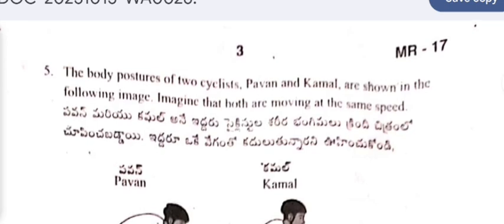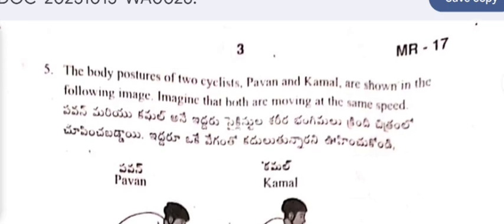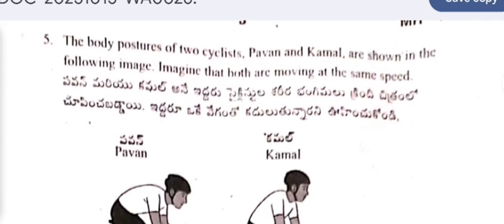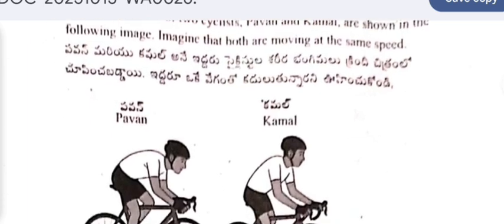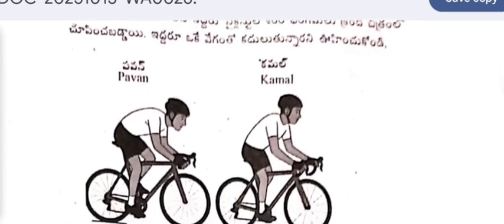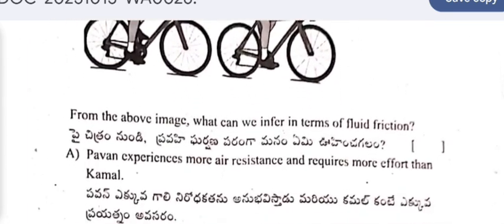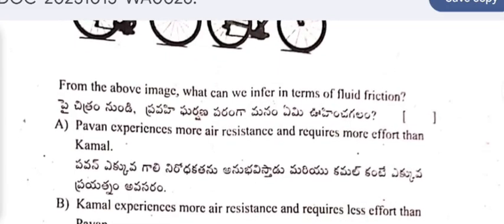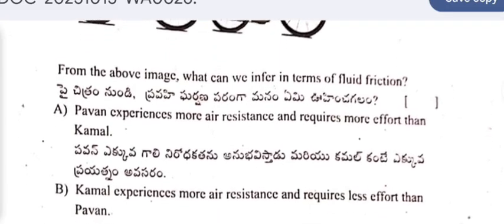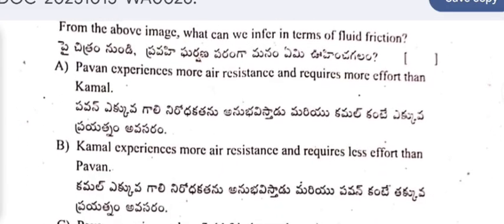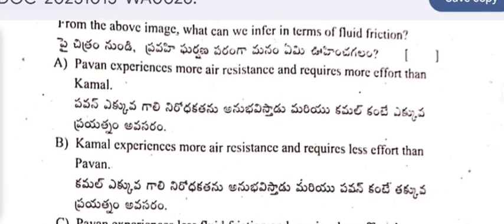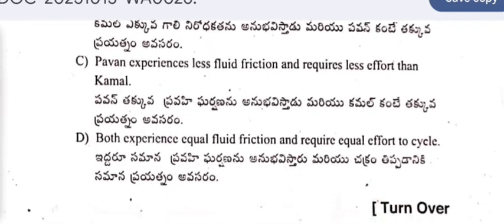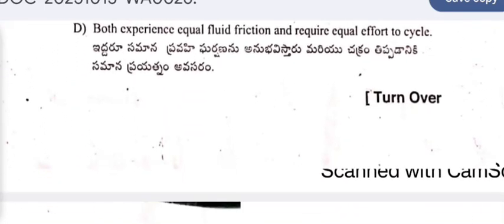Question 5: The body postures of two cyclists, Pawan and Kamal, are shown in the following image. Imagine that both are moving at the same speed. From the above image, what can we infer in terms of fluid friction? Option A: Pawan experiences more air resistance. Options A, B, C, D are given — pick the correct answer.